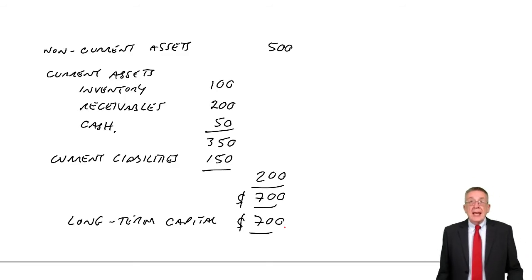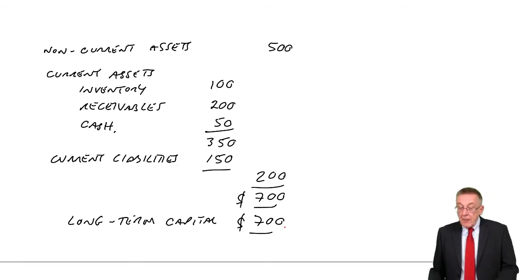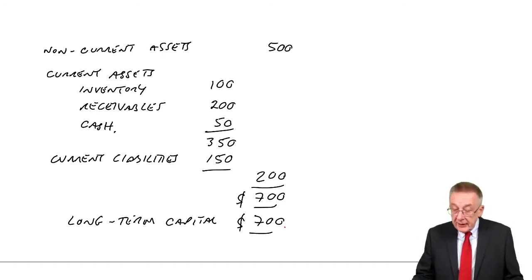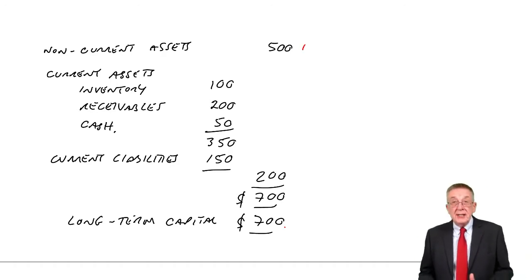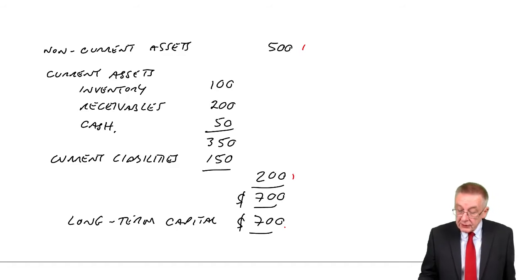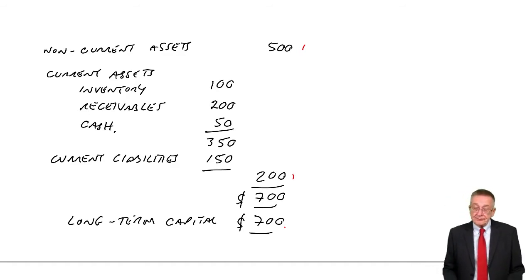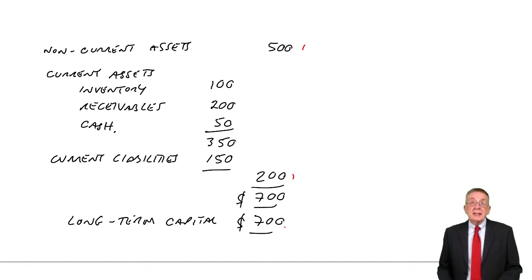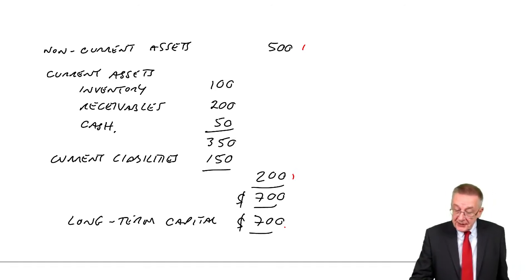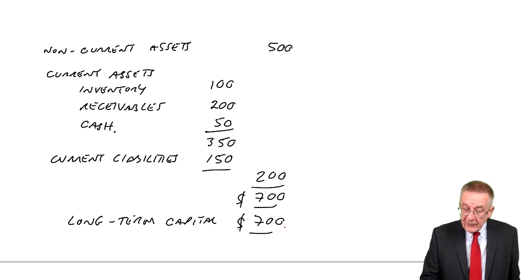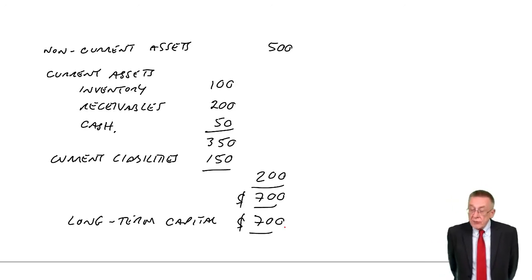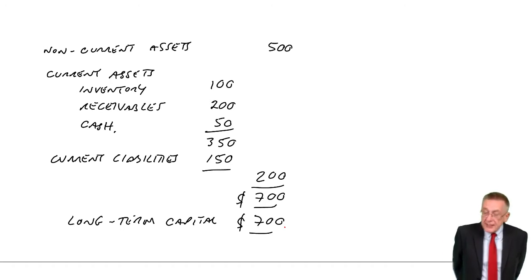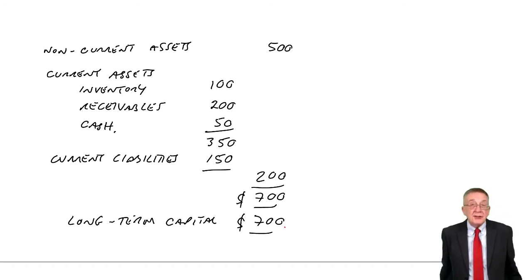As I said at the beginning of the previous lecture, the total long-term capital is 700. 500 of it is invested in non-current assets and 200 of it is in working capital. And suppose, as things stand, for our sort of business, the level of working capital is reasonable — inventories reasonable at 100, receivables at 100, and so on.